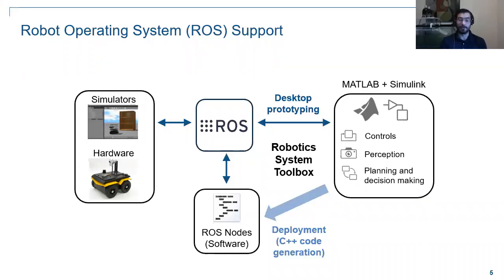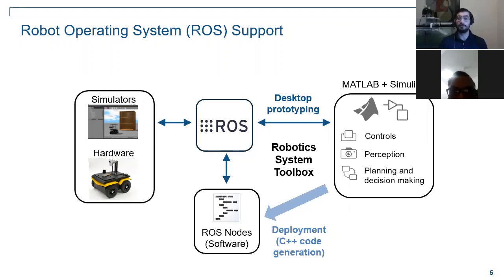For quick desktop prototyping, you can create your algorithms and test them without compiling any code, just trying commands on your desktop. Once you're ready to make your project standalone — not requiring a tethered computer — you can generate a ROS node from MATLAB and deploy it to your robot so it runs by itself. This automated code generation process is a key advantage of the MathWorks ecosystem.